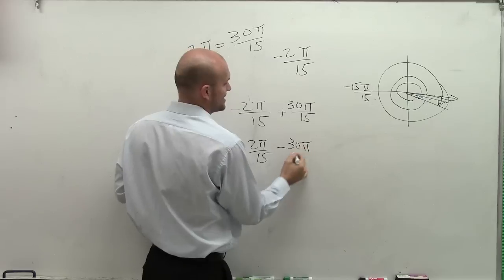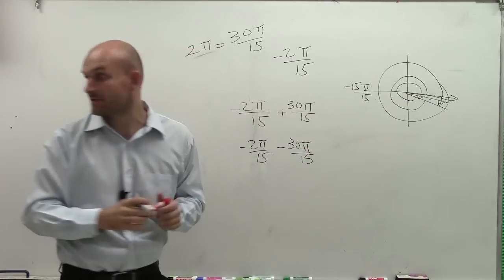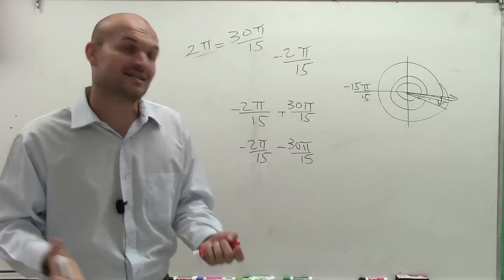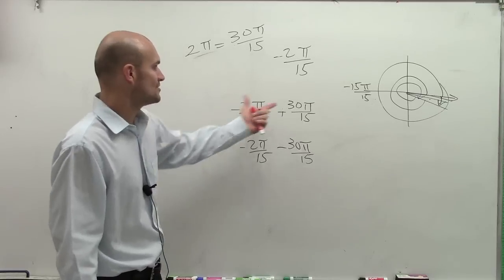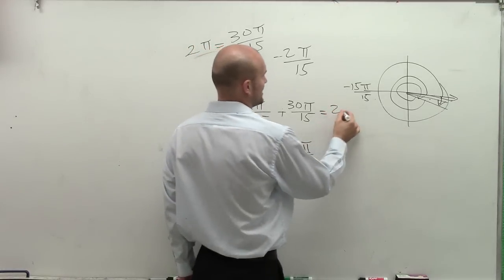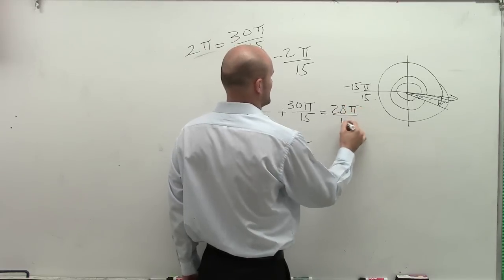Now, why would I want to do that? Well, the reason why I want to do that, ladies and gentlemen, because remember, when you're adding and subtracting fractions, you have to have the same denominator. So now, when I add this up, I get 28 pi over 15.